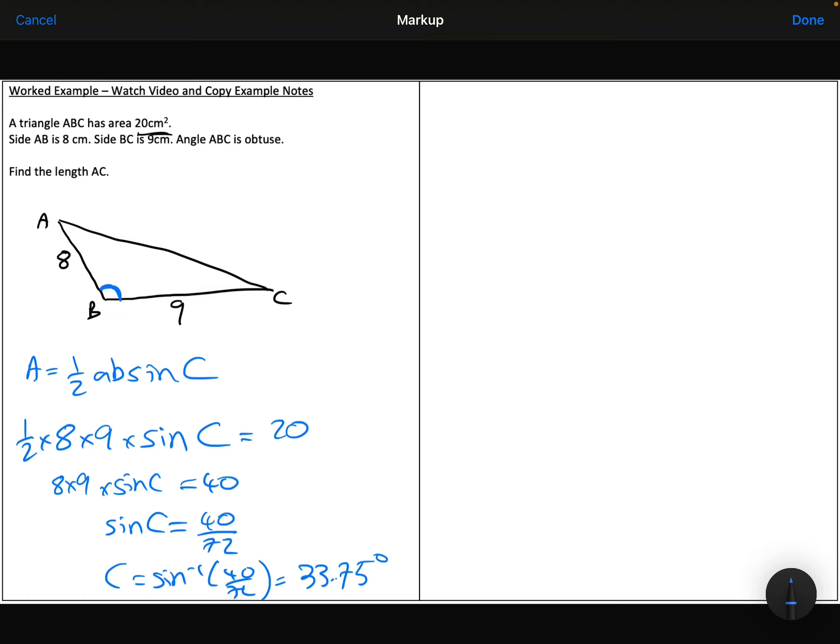Now, notice that that is an acute angle, not an obtuse angle. Remember that the sine graph looks like this. We have an acute angle here, and we have an obtuse angle here. Your calculator is only ever going to give you the acute angle.